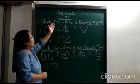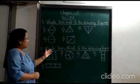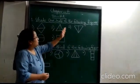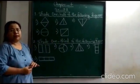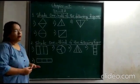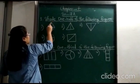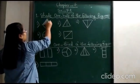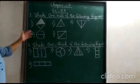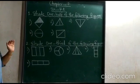The first question is: shade one-half of the following figures. Five figures are given. I will show you number one — you have to shade one-half of all the following figures. Here, done. One-half is shaded. Half portion is shaded and half is unshaded. This is one-half.